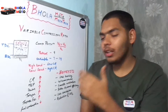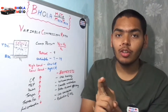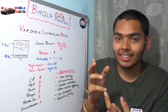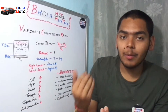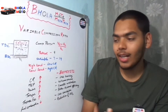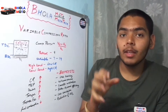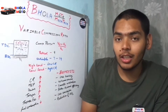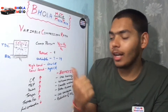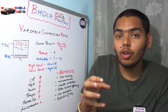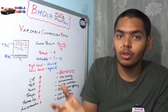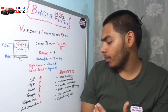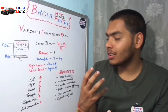Now, coming to the benefits of variable compression ratio. First, less knocking: at higher load you intelligently reduce the compression ratio, and at lower compression ratio the knocking chances are very low. Second, optimum power: at lower load you increase the compression ratio and extract the most power from the fuel, and at high load you avoid wasting energy on knocking — so you get more energy from the same air-fuel mixture.